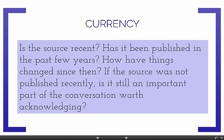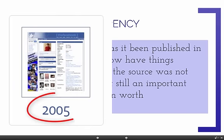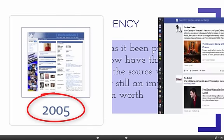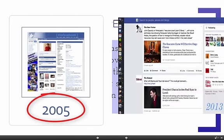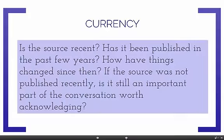If she or he is writing about Facebook and loneliness and citing sources published in 2005, then the author is referring to an old version of Facebook that may not apply to today's users. So even though the source is recent, the author's sources are dated and irrelevant, which could be a big problem.